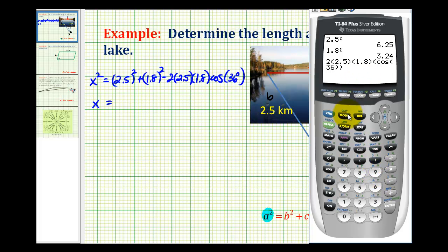Let's just make sure that we're in degree mode. So we're going to have 6.25 plus 3.24 minus approximately 7.28. Let's go ahead and write that down.